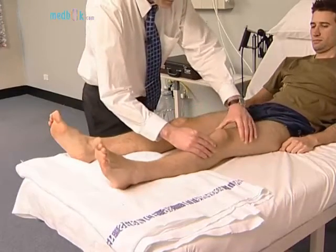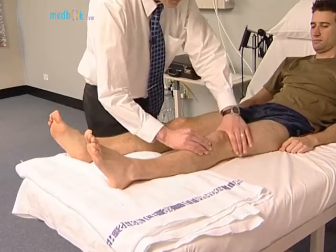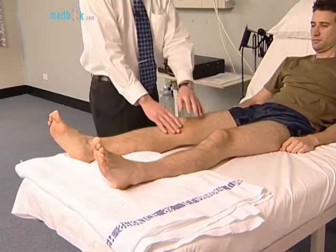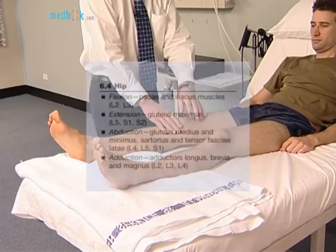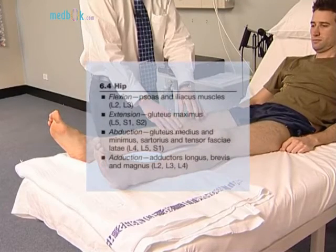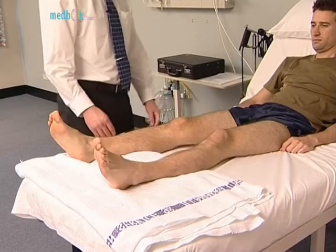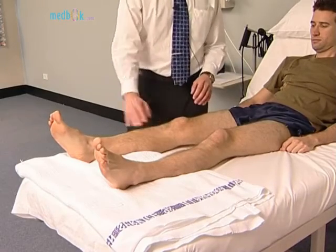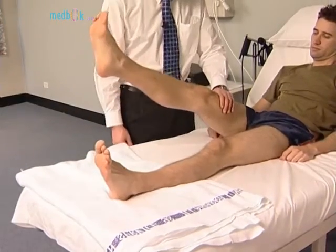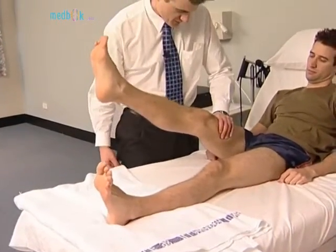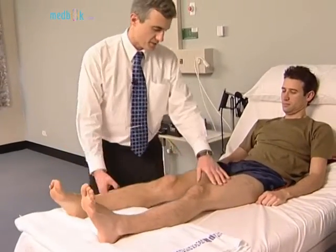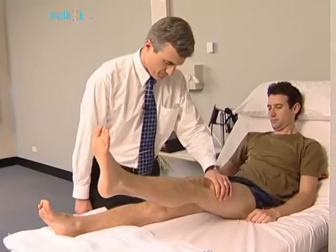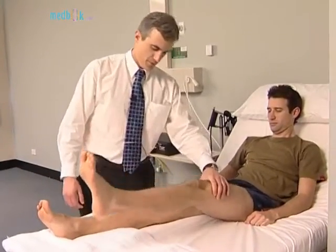Patellar clonus is tested next. Now test power. Start with hip flexion. What I'd like you to do is lift this leg straight up in the air and push hard against me. Then hip extension.